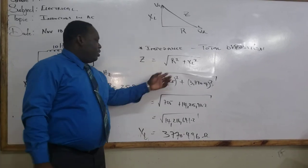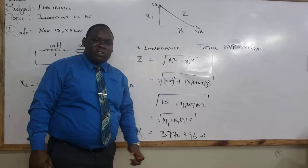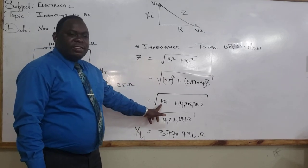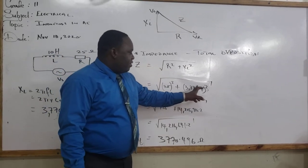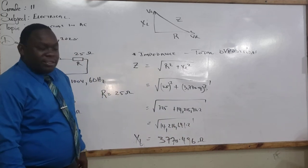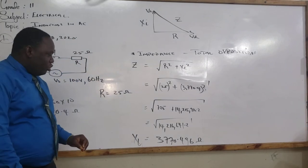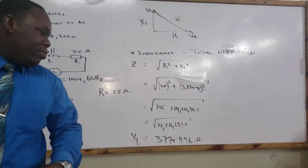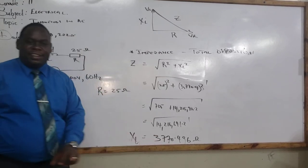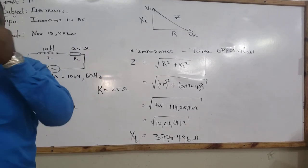Let me look at it now. 25 squared plus 3770.4 squared. And when you square them out, you get 25 squared equals 625 plus 3770.4 squared will be 14,216,016.2. When you add both of them, you get 14,216,641.2. And the square root of that number is 3770.496. So this is the total opposition.